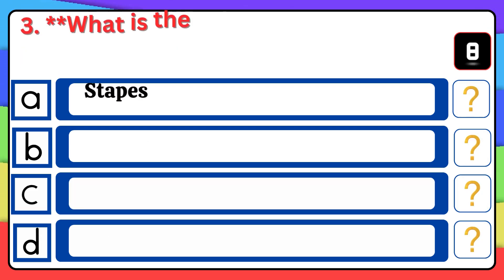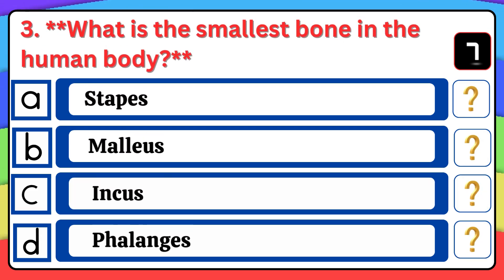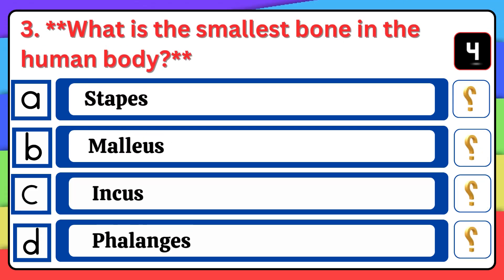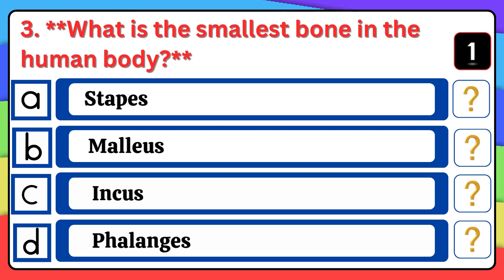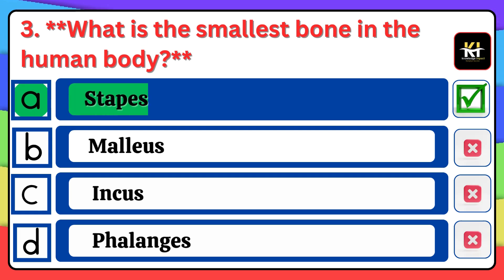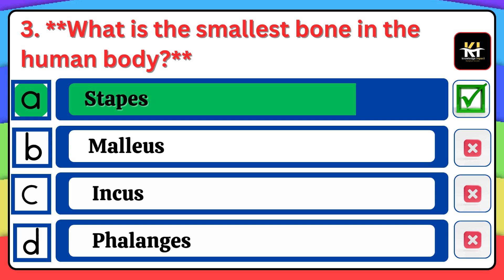Question number three: What is the smallest bone in the human body? Correct answer: Option A — Stapes.